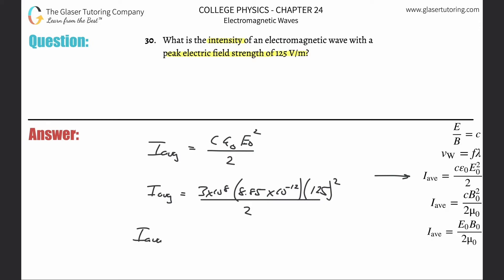So let's calculate now the average intensity. And by the way, they didn't mention if they wanted average or peak, but we'll go the easy route. 3 times 10 to the 8 multiplied by 8.85 times 10 to the minus 12 times 125 squared, all divided by 2, and we come up with a value of about 20.7. So 20.7, standard units are watts per square meter. That is the average intensity.